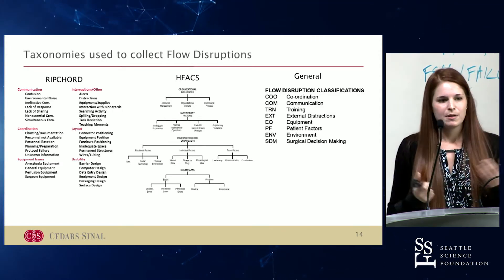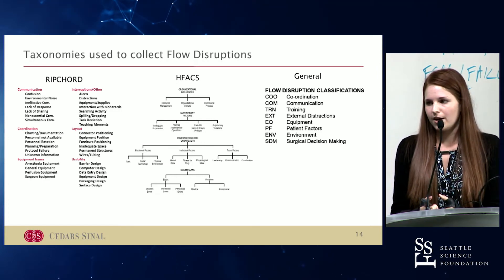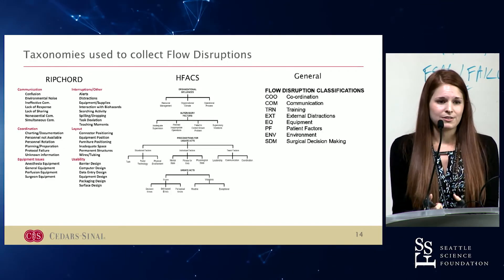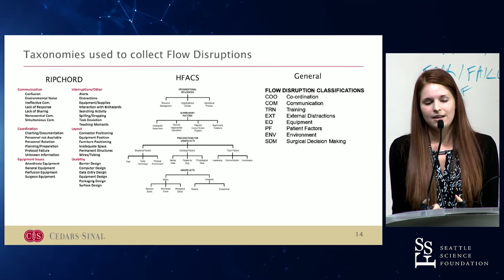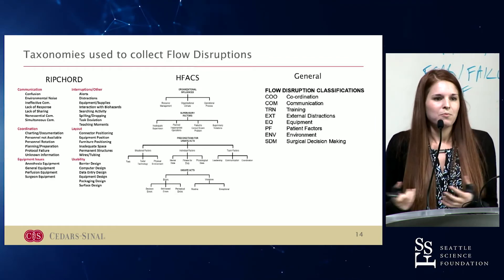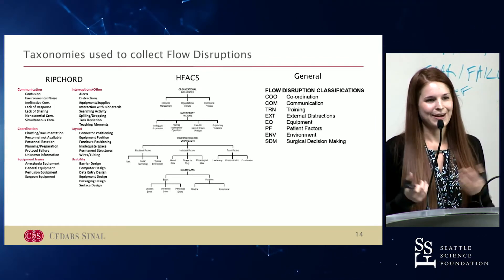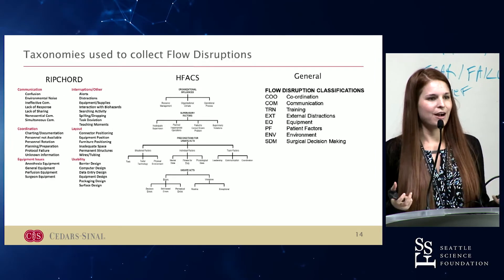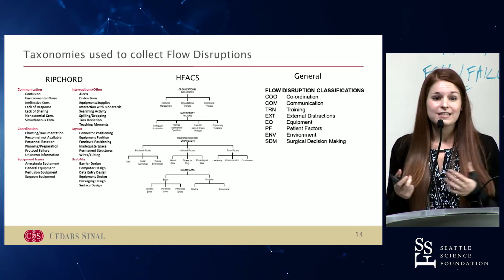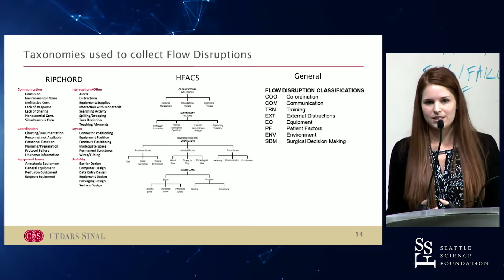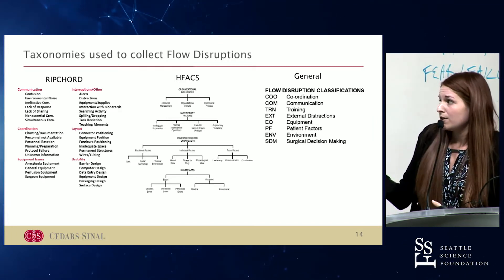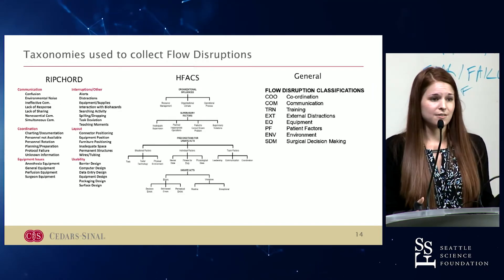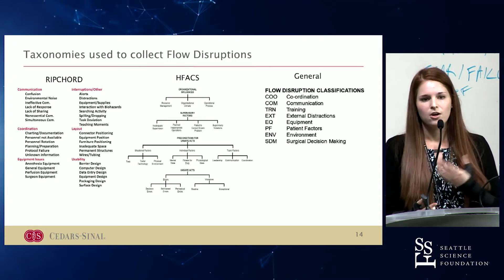There are a lot of different ways that people measure flow disruptions in surgery and different environments. I've used pretty much all three of these taxonomies — taxonomies are basically ways to categorize what we're seeing. You can use any one of these taxonomies, or you can create your own — come up with categories that these disruptions would fall into that are most relevant to you.